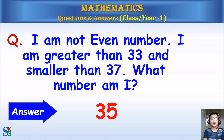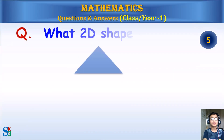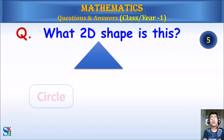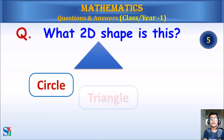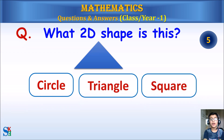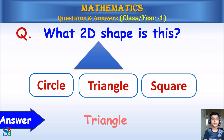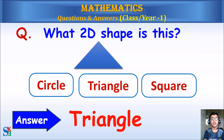Answer: 35. What 2D shape is this — circle, triangle, or square? Answer: Triangle.